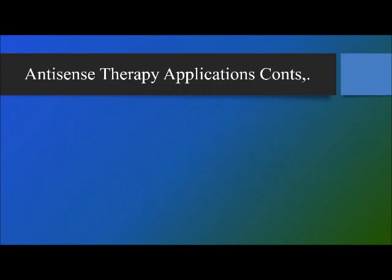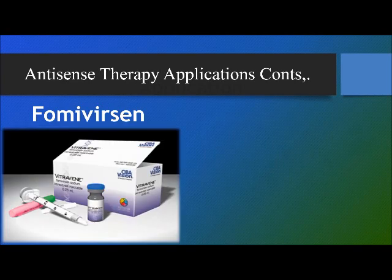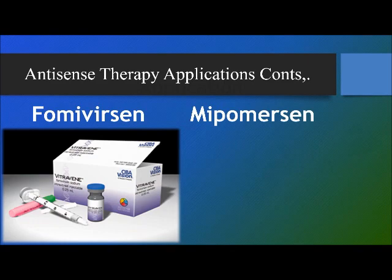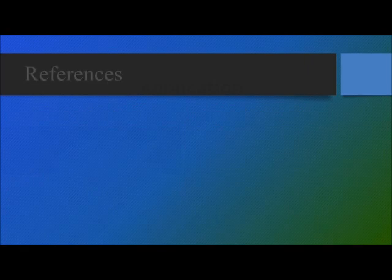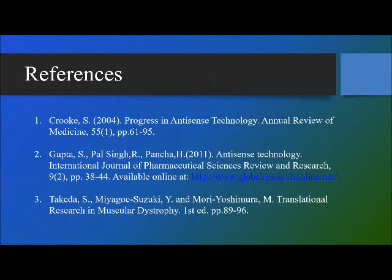The following are FDA-approved antisense drugs: firstly, fomivirsen is used to treat cytomegalovirus retinitis; secondly, mipomersen is used to treat familial hypercholesterolemia. The following are the references used to assemble this presentation.